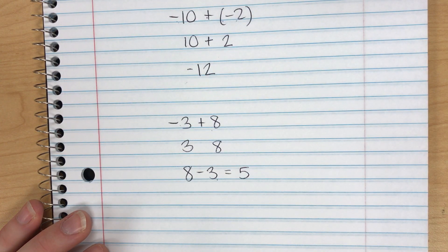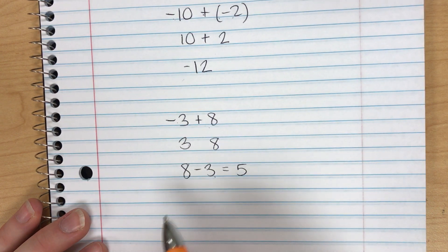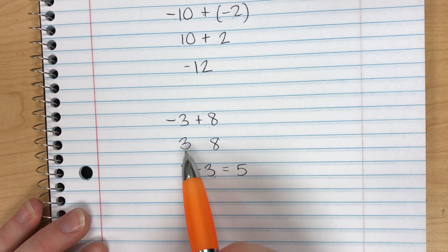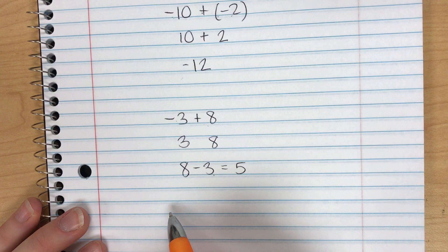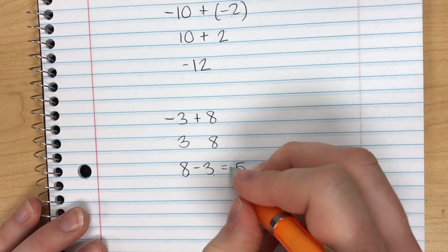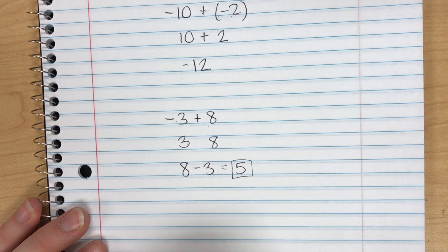The question is is it positive 5 or negative 5? I want to look back at my problem and compare the values. The highest absolute value of these two numbers is 8. My 8 is positive so my answer will stay positive. So negative 3 plus 8 is positive 5.